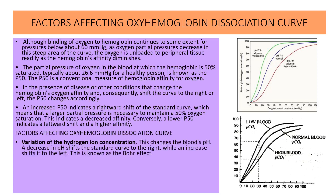There are various factors which affect the oxyhemoglobin dissociation curve. The first factor is variation of hydrogen ion concentration, which changes blood pH. A decrease in pH shifts the standard curve to the right, while an increase shifts it to the left. This is also known as the Bohr effect. From the top graph we can see that if the pH is changed, the oxyhemoglobin dissociation curve changes accordingly.